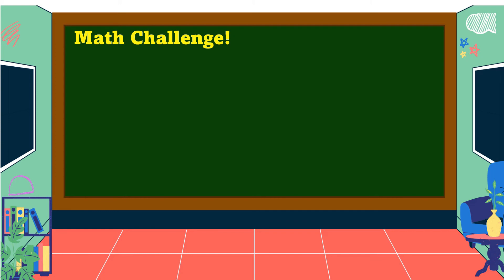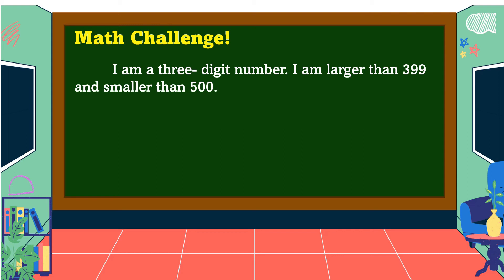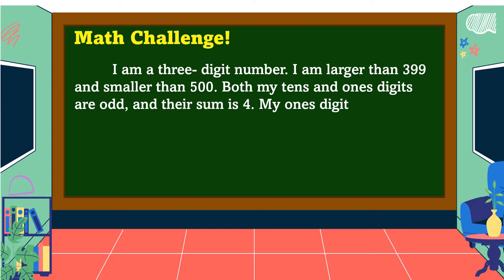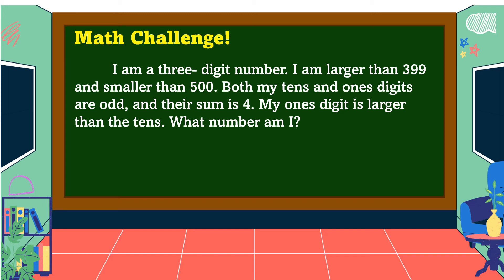Now let's take a math challenge. I am a 3-digit number. I am larger than 399 and smaller than 500. Both my tens and ones digits are odd, and their sum is 4. My ones digit is larger than my tens digit. What number am I? Let's analyze the problem sentence by sentence. First, draw 3 lines for a 3-digit number. Numbers larger than 399 but smaller than 500 go from 400 to 499, so our hundreds digit is 4.